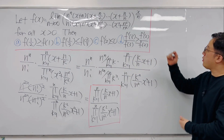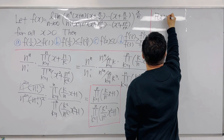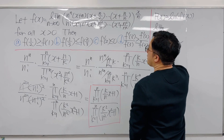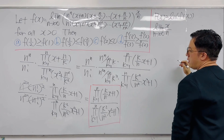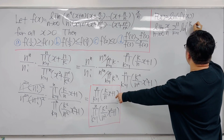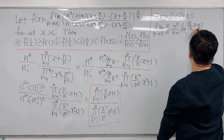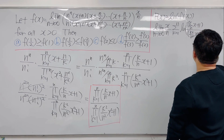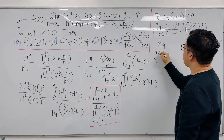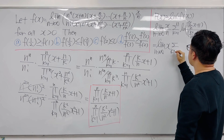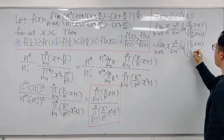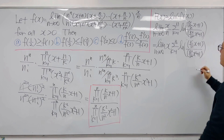We can form a Riemann sum. Let capital F of x equal ln of f of x. Then capital F of x equals the limit as n goes to infinity of x times the summation from k = 1 to n of ln[(k/n · x + 1) / (k²/n² · x² + 1)] times 1/n. This is a Riemann sum, so we rewrite it as x times the integral from 0 to 1 of ln[(y·x + 1) / (y²·x² + 1)] dy.